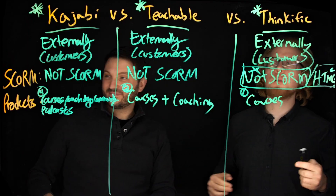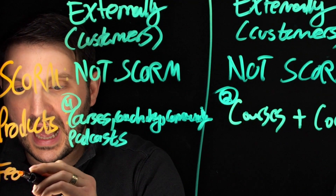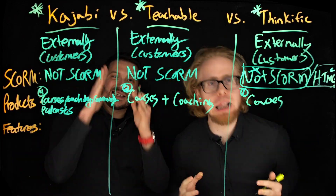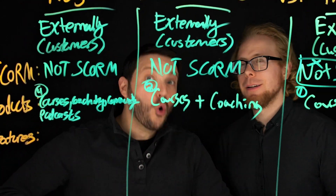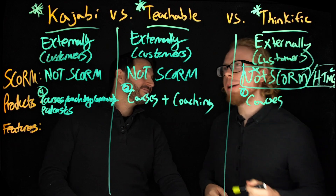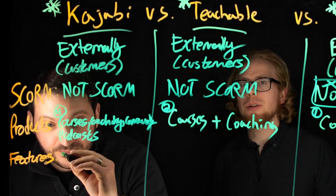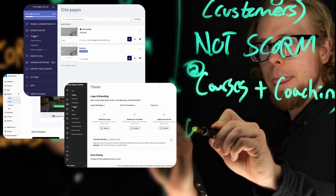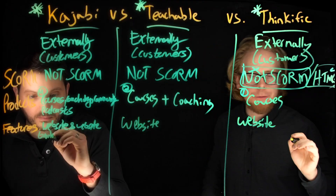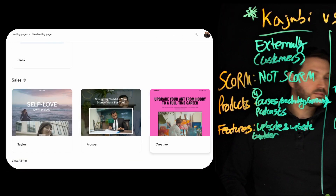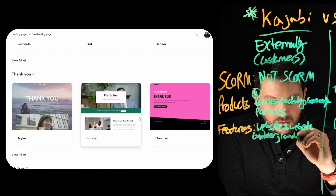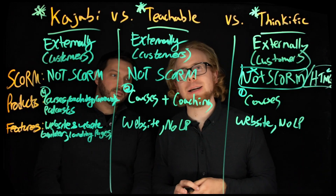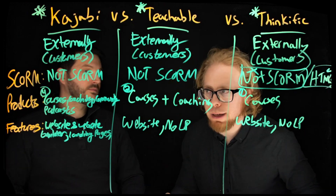Let's compare Kajabi, Teachable, and Thinkific based on features. You are selling your course — trying to make that money. In order to sell your course, you're going to need a website. Kajabi has a website and website builder. Teachable and Thinkific also have a website and website builder, but Kajabi's is better. Teachable and Thinkific don't have a robust landing page builder — you're stuck with templated landing pages created when you create the course. You can't just make a bunch of custom landing pages.